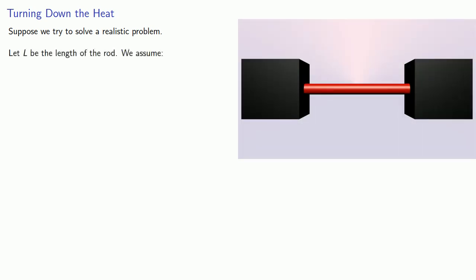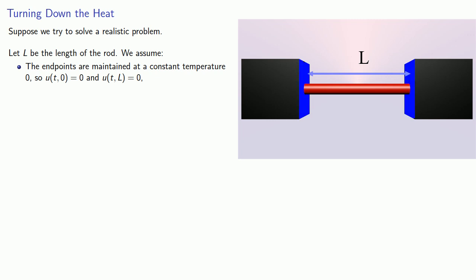Let L be the length of the rod. We'll make the following assumptions. First, we'll assume the endpoints are maintained at a constant temperature, 0. So u of t 0 is 0 and u of t L is equal to 0.